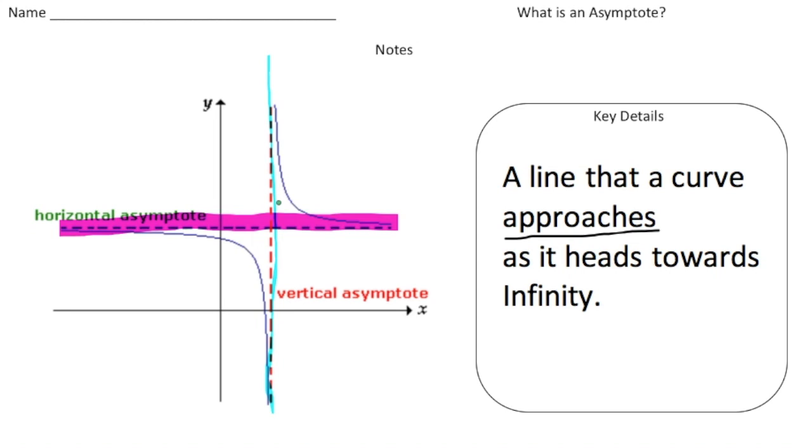So again, an asymptote is a line that a curve approaches as it heads towards infinity.